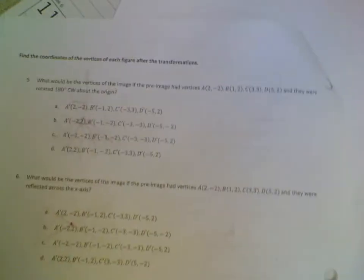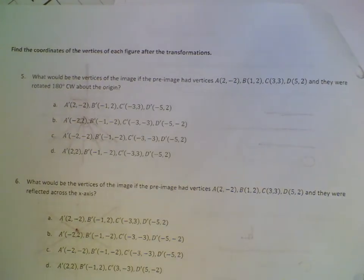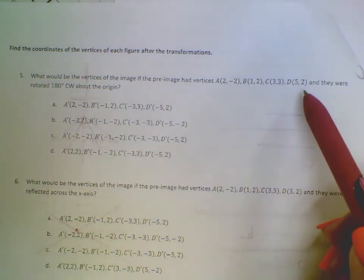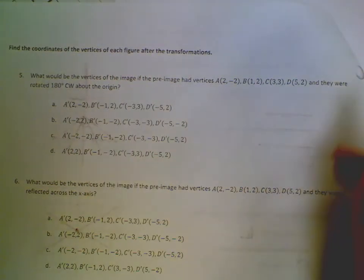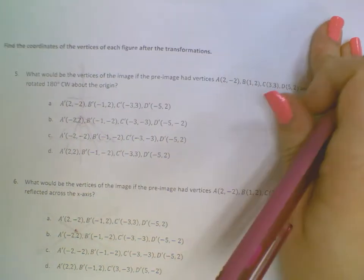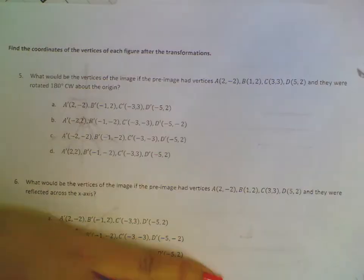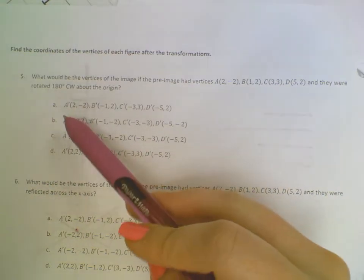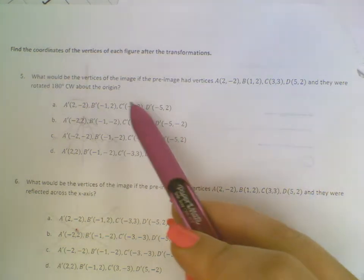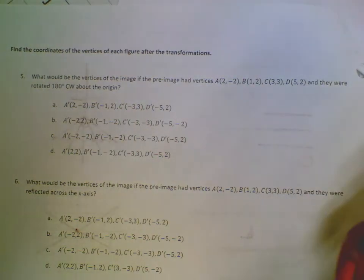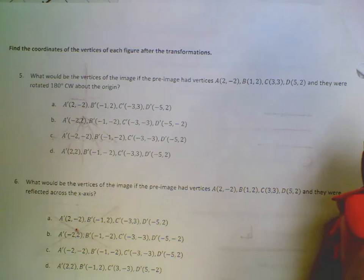For number five, we really need to know our rules. So for number five, it says that we have these vertices and they were rotated 180 degrees clockwise about the origin. So our rules in our wrap really only work for counterclockwise, but 180 degrees clockwise is the same as 180 degrees counterclockwise. So I can leave it as 180 and it'll be fine.